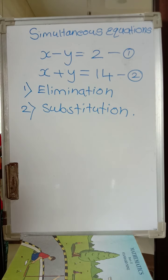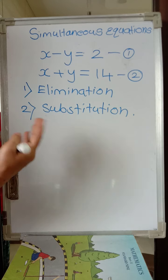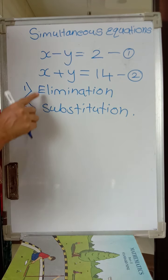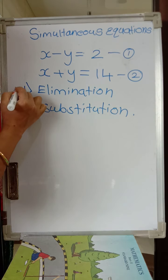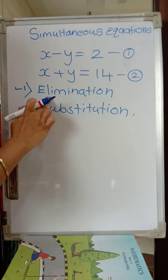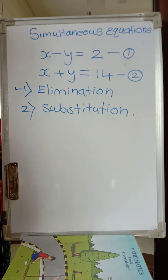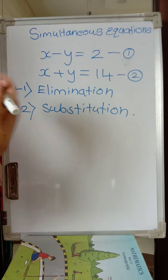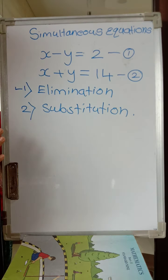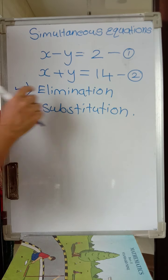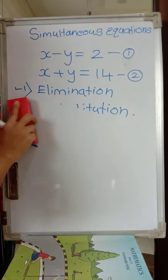In tenth standard we have two more methods that we will discuss afterwards, but first let us understand elimination and substitution. The word 'elimination' itself tells you the meaning — to eliminate one variable out of the two. We will concentrate on this first, then go for substitution.